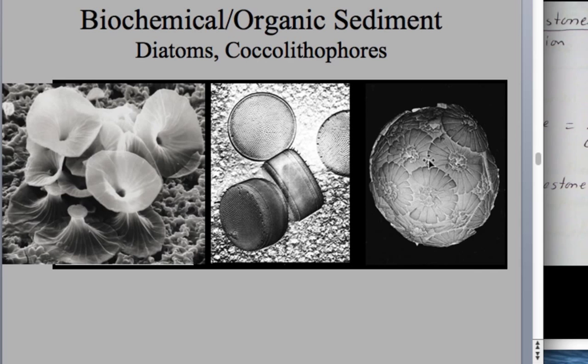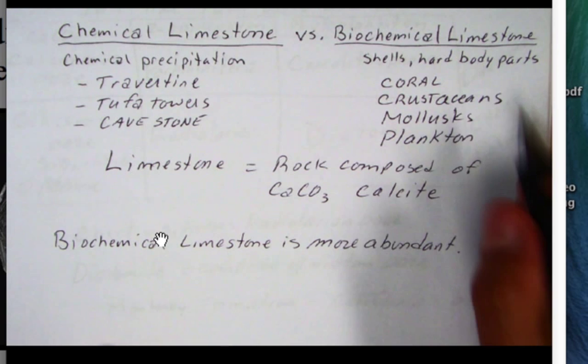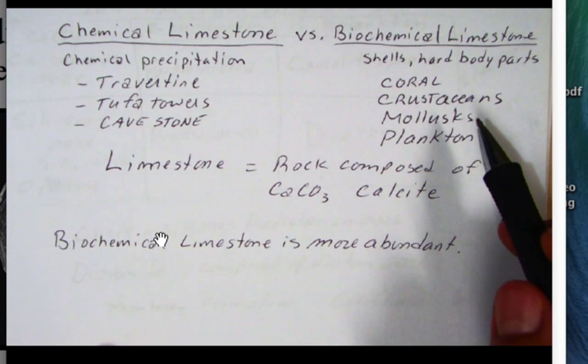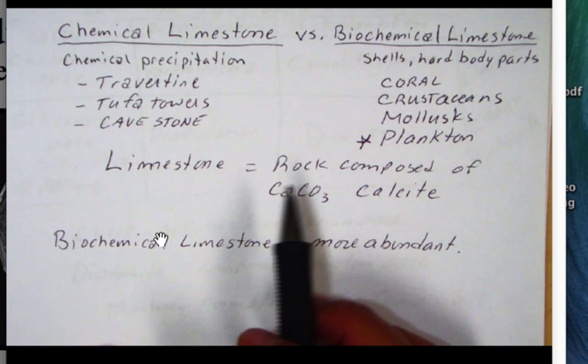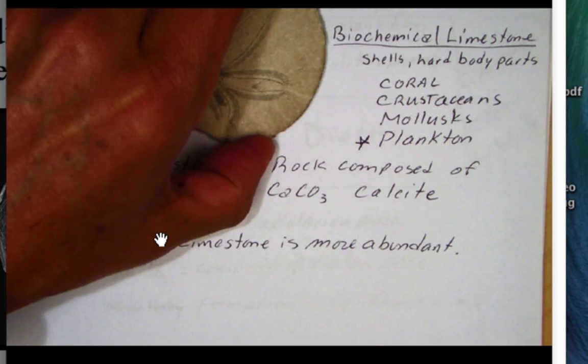For the biochemical limestones, these are the hard body parts of organisms. They include shells of coral, crustaceans, molluscs, and plankton — in fact, plankton is going to be the most important one. Many organisms make their shells out of calcium carbonate, and when the organism dies, they can leave their shell behind and that would become sediment.